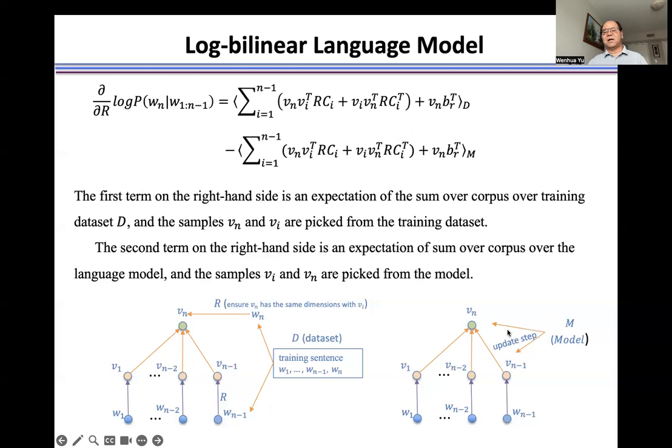For the second term, at each update step, we use this Vi and the Vn as samples to calculate the expectation of this sum over the language model.